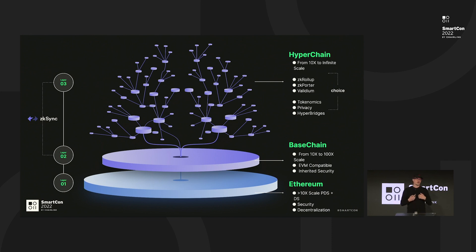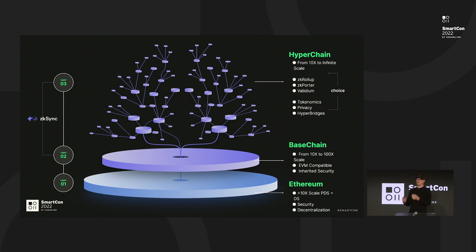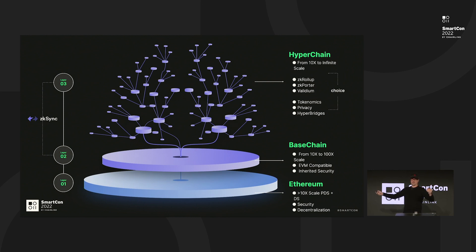Infinite scalability and infinite customization are the two key watchwords when thinking about Layer 3. When you get up into Layer 3 and you're building a fractal blockchain — we call it a hyper chain — you'll have three structural choices: a ZK roll-up, a ZK porter, and a Validium. ZK roll-ups will be ZK roll-ups recursing inside of ZK roll-ups to the base chain. This is what a DeFi company would choose if trying to maximize security, because you'll be able to inherit the security of Ethereum into that Layer 3 solution.